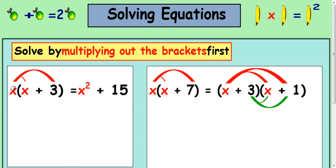So firstly, we've got x bracket x plus 3 equals x squared plus 15. So whenever you see brackets in the equation, you should be multiplying them out straight away and then simplifying the rest to solve the equation. So if you do x times x to get x squared and then x times 3 to get 3x, that's how you multiply in the bracket.